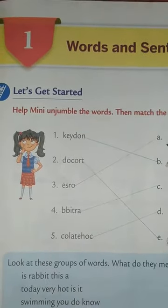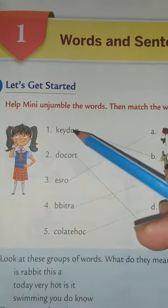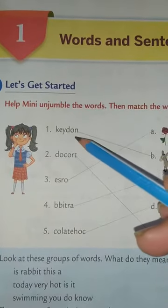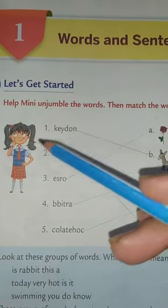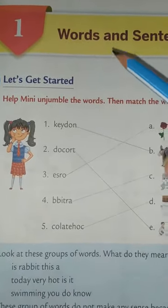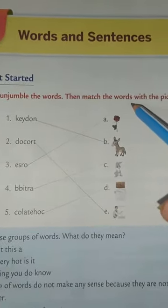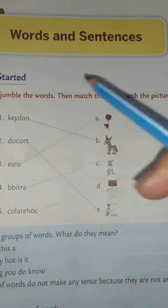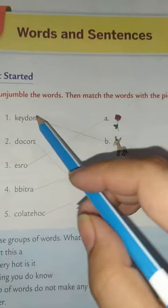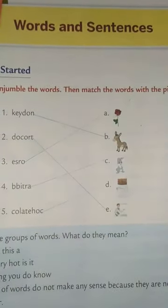Help Mini — Unjumble the Words. Here there are some words that are misplaced. You have to unjumble the words and then match the words with the pictures. You have to match the words properly with the pictures.